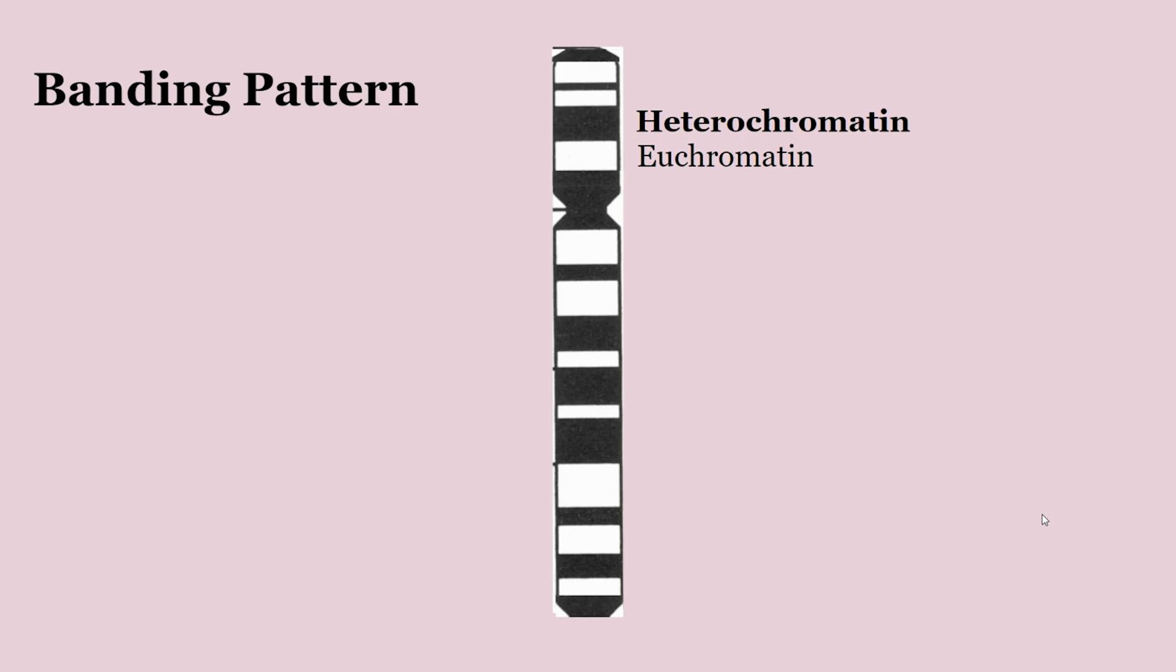While banding pattern is explored more thoroughly in research and genetic mapping, in this course you don't need to track every locus of heterochromatin and euchromatin, especially for differentiating between chromosomes. I mean you can, but you'll just get a giggling chromosome.